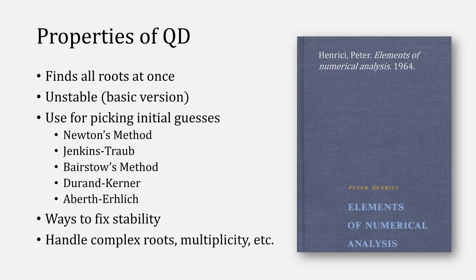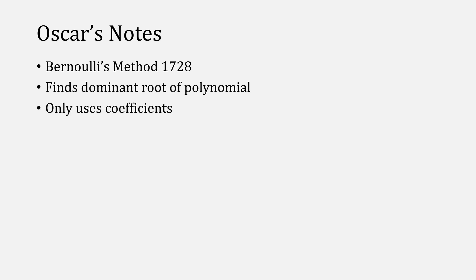To briefly go over everything we've talked about, Bernoulli's method was first published in 1728, and it finds the dominant single root of a polynomial, only using the coefficients with a linear order of convergence.